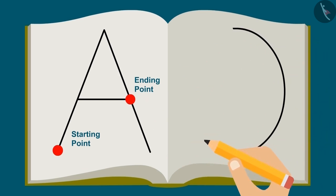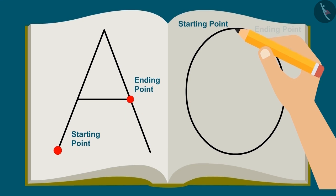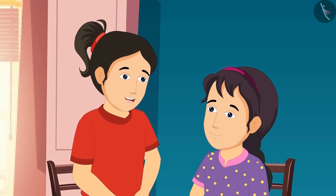And if we draw O on a paper, then the starting and ending points are the same. Hence it has a closed shape. Okay, I never thought about it sister.